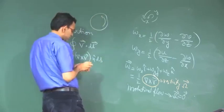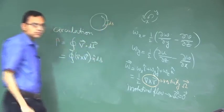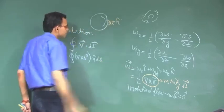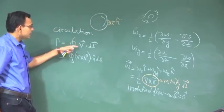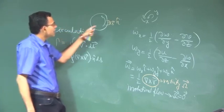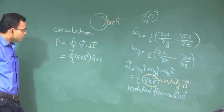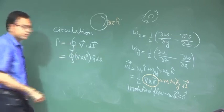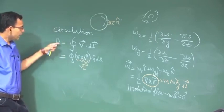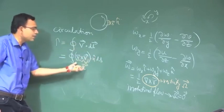If you have a closed loop like this, you can take a small area element ds and the unit normal vector eta to it. This line integral can be converted into an area integral where the area is bounded by this line. Clearly circulation and vorticity are related, because curl v is nothing but the vorticity vector. So qualitatively, circulation per unit area will be the vorticity.